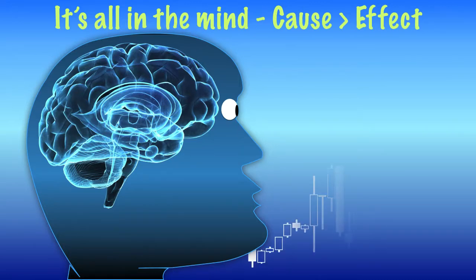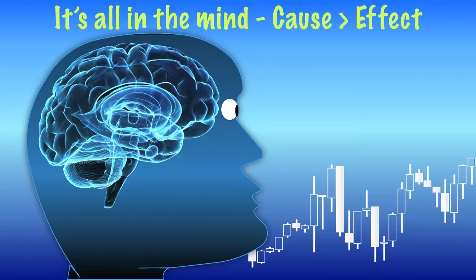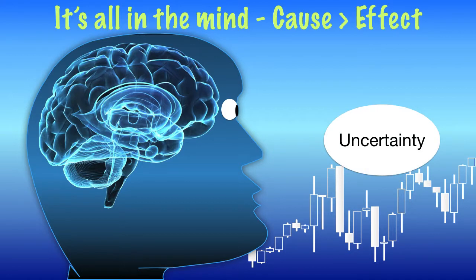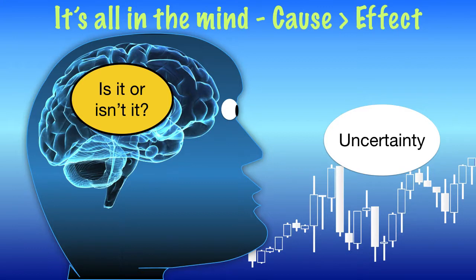In trading we operate in a sea of uncertainty. Things are only certain after the event. We see a possible opportunity, but we aren't certain whether or not the trade will work out. We aren't certain that the market will go the way that we anticipate, and we aren't certain whether other traders have seen what we've seen.